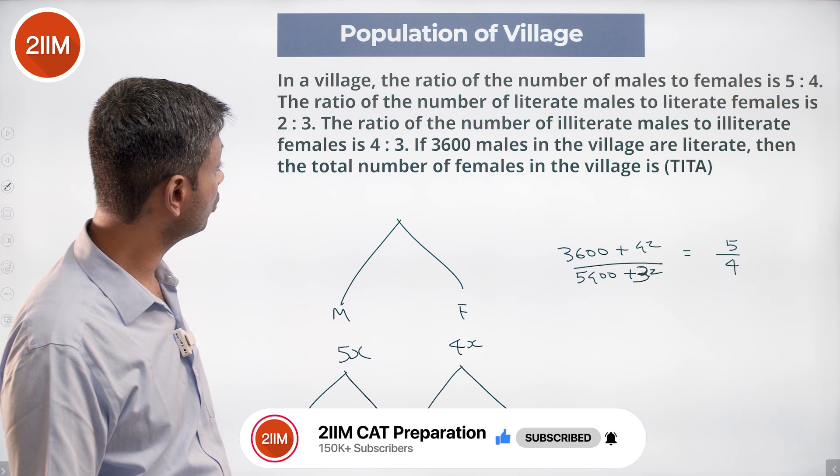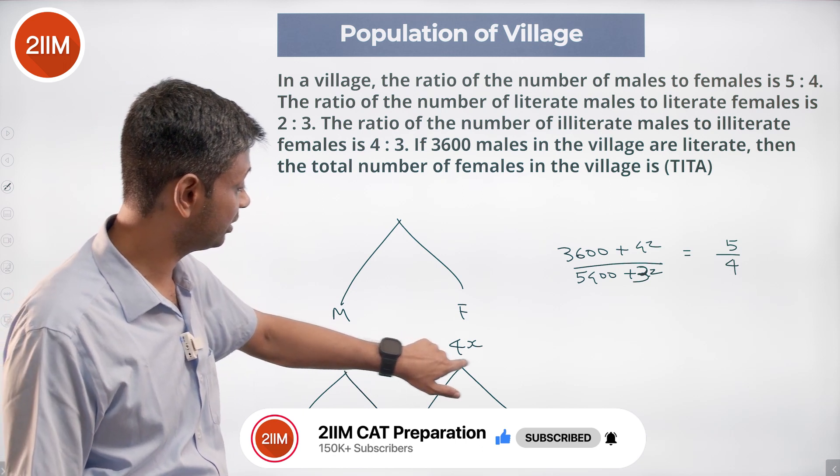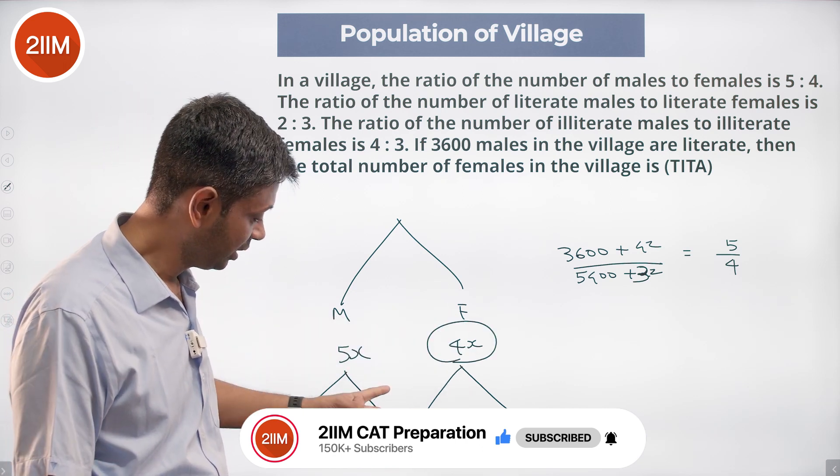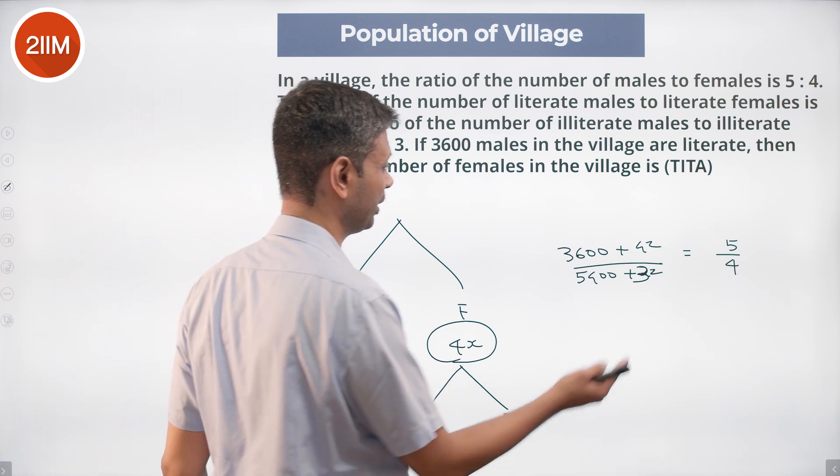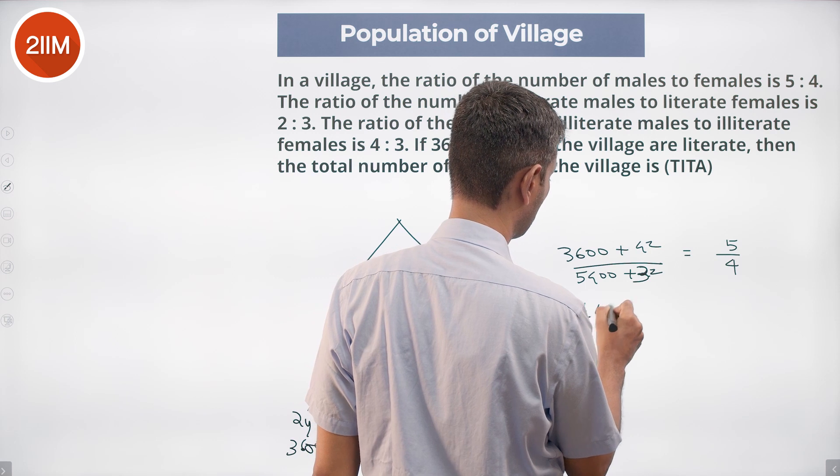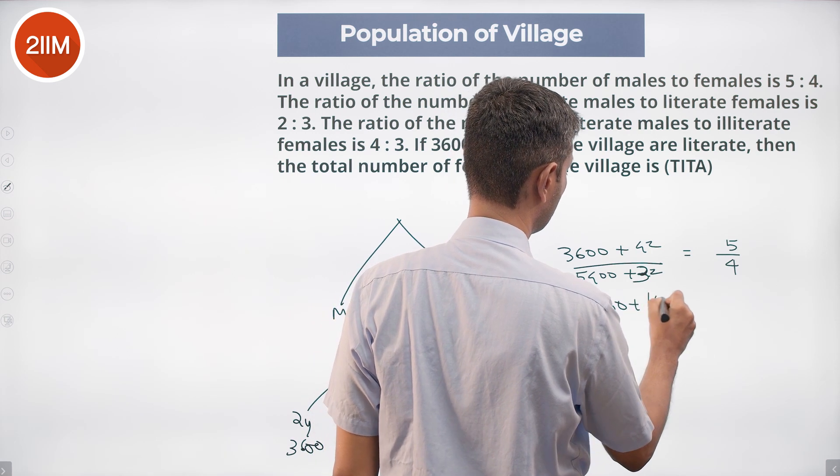When total number of females in the village, we need to find 3Y plus 3Z. How do we do this? Cross multiplying, this is 14400 plus 16Z equals 5400 times 5, which is 27000 plus 15Z.